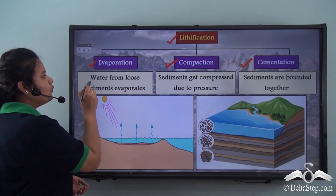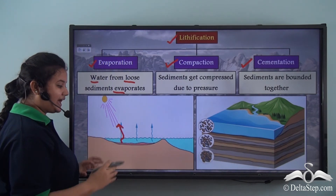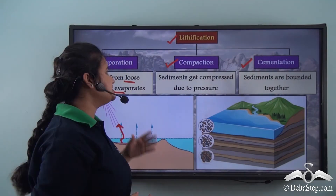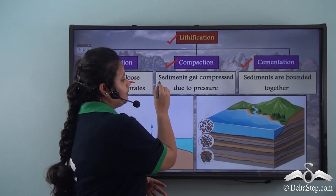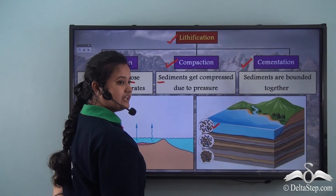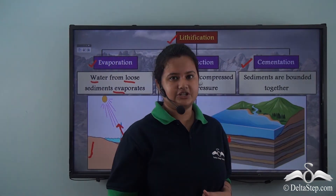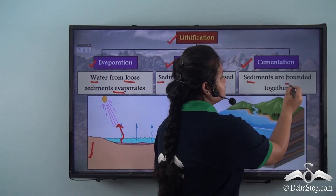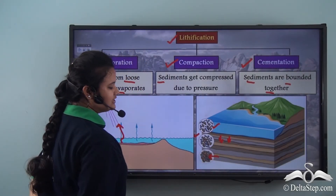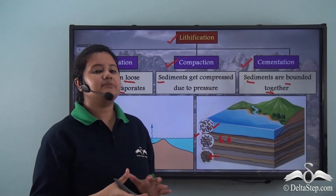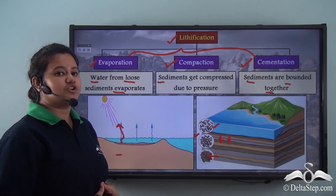Evaporation is a process in which water from loose sediments evaporates. In this picture we can see the layer of sediments with water evaporating, causing them to become more compact. In compaction, the sediments are compressed by the overlying layers of rocks and become more compact. In cementation, the sediments are stuck together by a natural sticky substance like a mineral solution, which seeps into the sediments and binds them together. All three processes lead to the formation of sedimentary rocks.